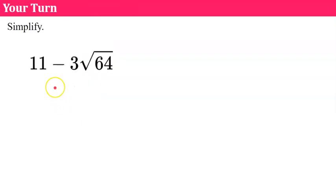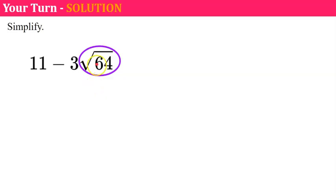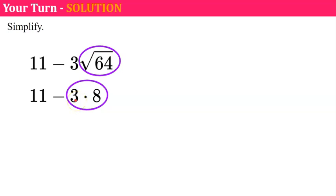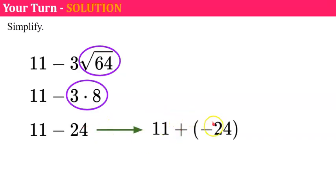Pause, simplify, and come back to check your work. The first thing we do is clear the square root symbol. Eight times 8 is 64, so the square root of 64 is 8. Then multiply: 3 times 8 is 24. Now subtract: 11 minus 24. Rewriting to add the opposite, the two have different signs and the absolute value of 24 is largest, so the sum is negative: 24 minus 11 is 13, giving us negative 13.